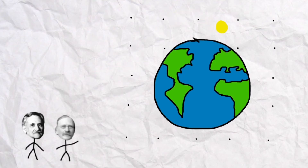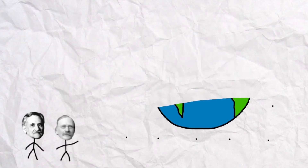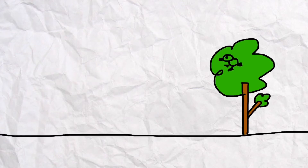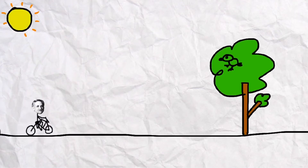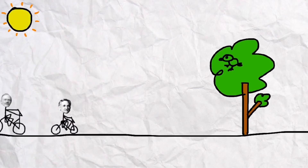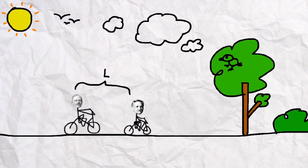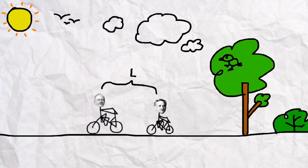Let's illustrate this with a thought experiment on bikes. Even when he's on a lazy bike ride, Michelson's mind is never liberated from plans for his next experiment — and he's about to collide with a tree. Morley calls out a warning from a distance L behind Michelson, but it might be too late.